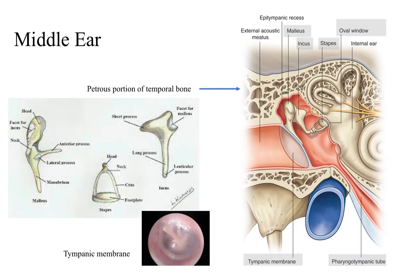The middle ear is on the other side of the tympanic membrane, which is in the petrous portion of the temporal bone. Just underneath the petrous portion of the temporal bone, before you get to the internal ear, which is completely encased in bone.